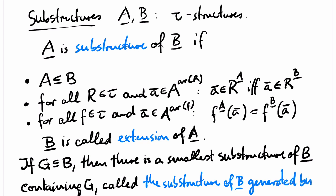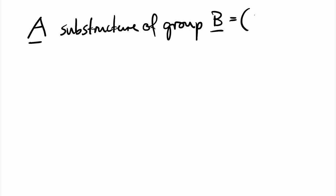Let's have a look at substructures of groups, one of our running examples. In the case of groups, substructure and subgroup means the same thing. This is because of the choice of our signature.